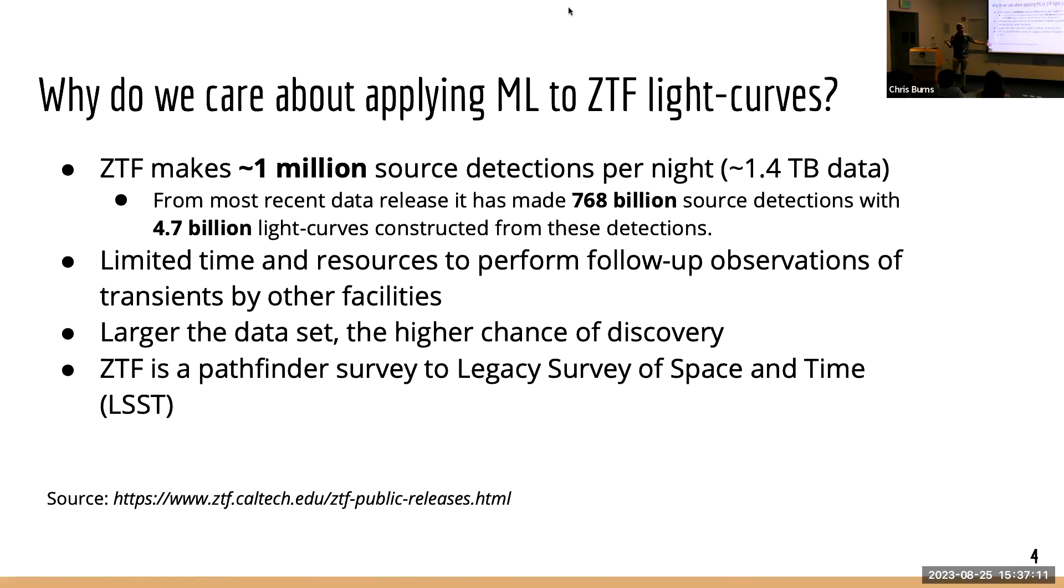When we're working with these larger data sets, there's higher chances of discovering new types of events. To be able to use machine learning to capitalize on that fact is really important instead of just visually vetting and trying to find interesting gems in the data sets. And lastly, ZTF is a pathfinder survey to the legacy survey of space and time, which will come online in the near future out of the Vera Rubin Observatory. ZTF is operating about 10% scale to what LSST will be once it comes online.